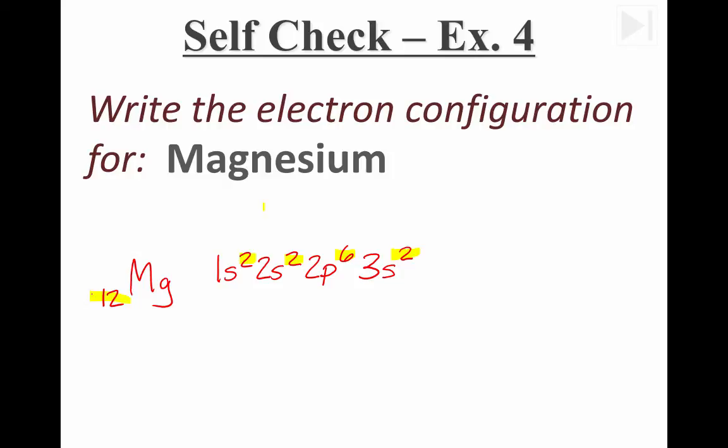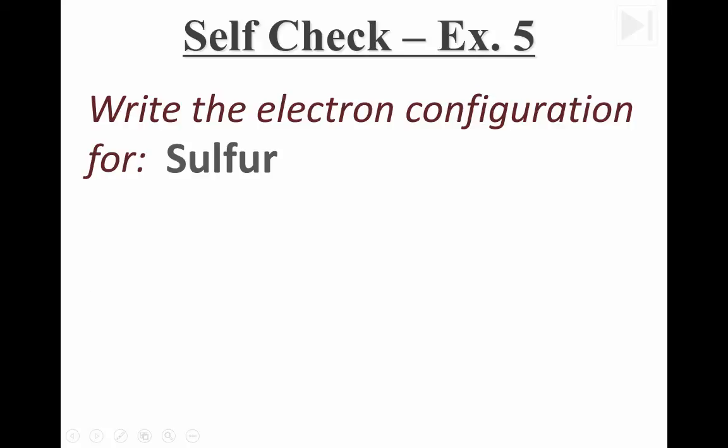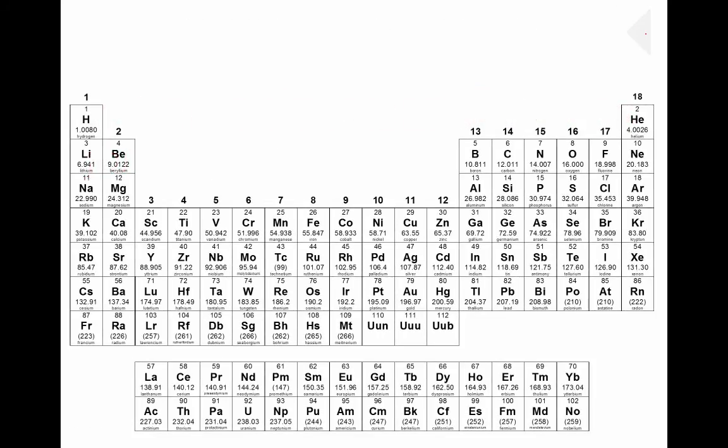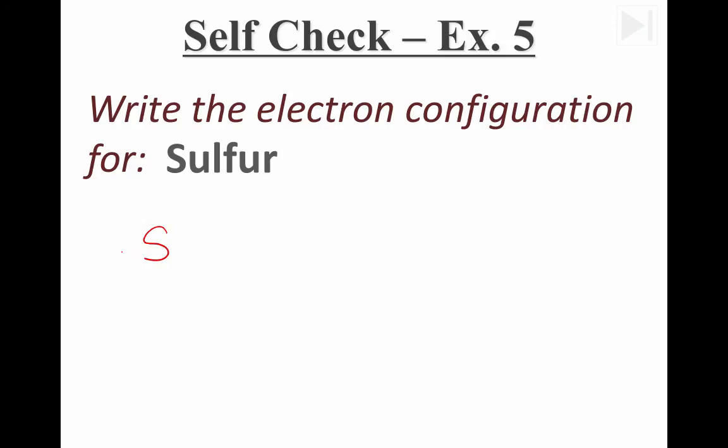Let's try our next example. We're going to write the electron configuration for sulfur. The periodic table shows sulfur over here with 16 electrons. So I write down the symbol for sulfur with the number 16 so that I know what I'm drawing. And then I begin with 1s2, 2s2, 2p6. I'm going to keep writing until I get 16 electrons. So that's 10 so far. This gives me two more. That's 12.